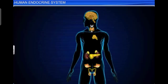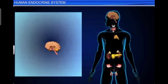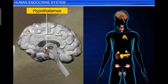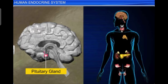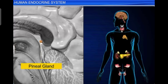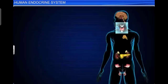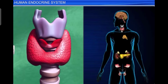The human endocrine system consists of different endocrine glands located in different parts of the body. The hypothalamus is situated at the basal part of the diencephalon in the forebrain. Just below the hypothalamus, a small pinkish gland called the pituitary gland is known as the master gland of the endocrine system. Another gland located on the dorsal side of the forebrain is called the pineal gland — a small reddish gland shaped like a pine cone.